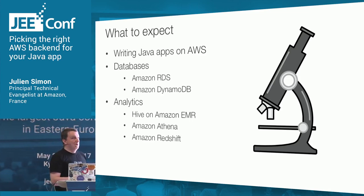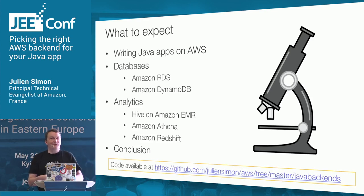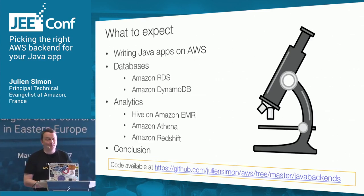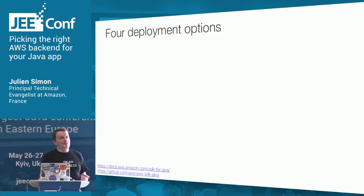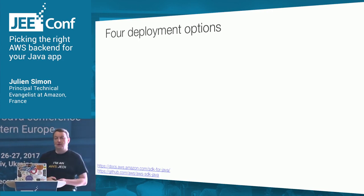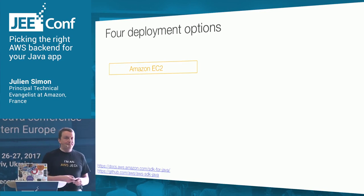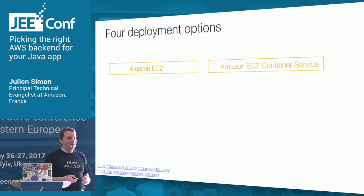I've been a software engineer for way too long, and I ended up being a CTO and VP of engineering for a number of startups in Paris. For the last 18 months I've been working with AWS and traveling all over Europe. All the code I'm going to use today is on GitHub, so feel free to get it. If you find a bug, you can send me a pull request.